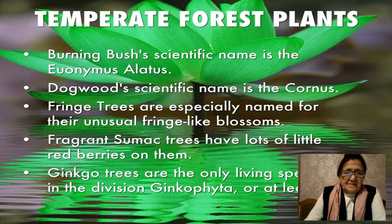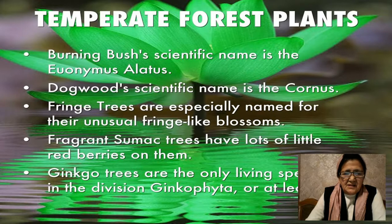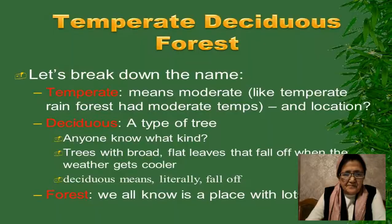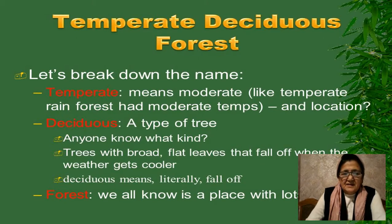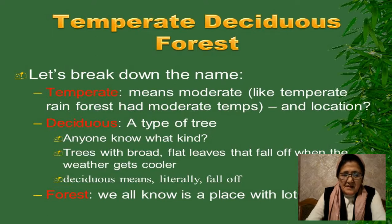Temperate forest plants. Temperate means moderate, like a temperate rainforest at moderate temperatures. Deciduous refers to a type of tree — trees with broad, flat leaves that fall off when the weather gets cooler. Deciduous literally means 'fall off.' And a forest, as we all know, is a place with lots of trees.